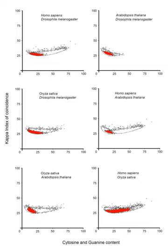As promoters are typically immediately adjacent to the gene in question, positions in the promoter are designated relative to the transcriptional start site, where transcription of DNA begins for a particular gene. Positions upstream are negative numbers counting back from −1; for example, −100 is a position 100 base pairs upstream.